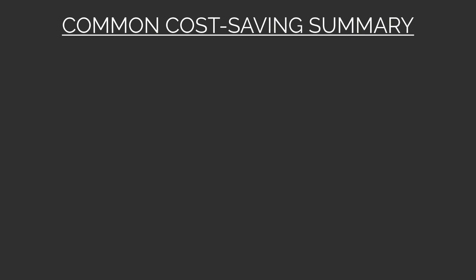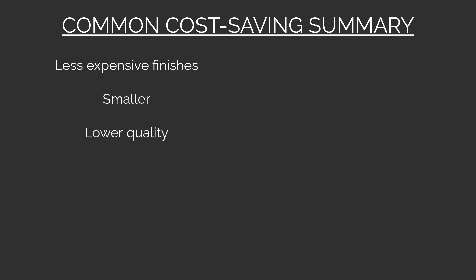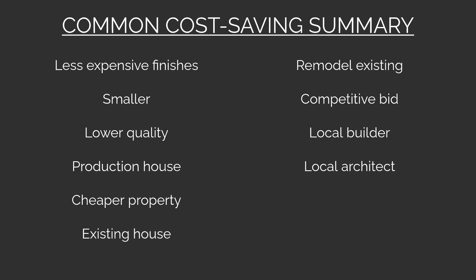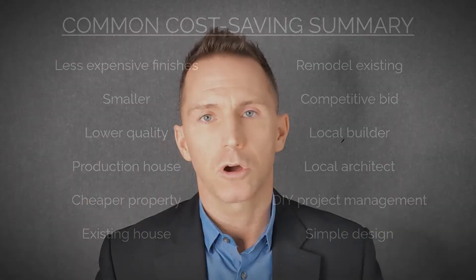To summarize, the top techniques that you might find on the internet to bring down the costs of constructing a new house or remodeling an existing one are: going with less expensive finishes, going with a smaller house size, choosing a lower quality house, buying a production home from a builder or developer, cheaper properties or a property with an existing house, remodeling an existing house, competitive bidding by getting prices from a number of builders, selecting a local builder, selecting a local architect, self-managing the project (which I highly advise against), and last, a simpler design for your house.